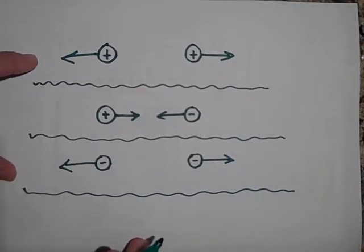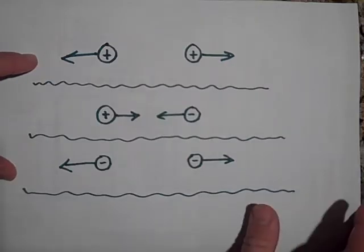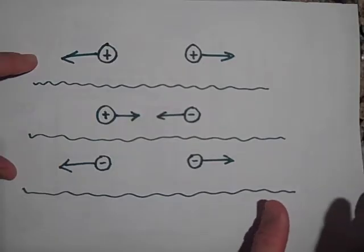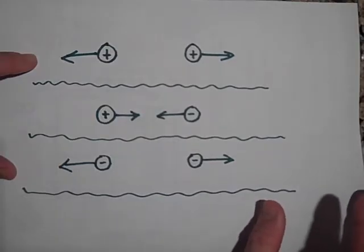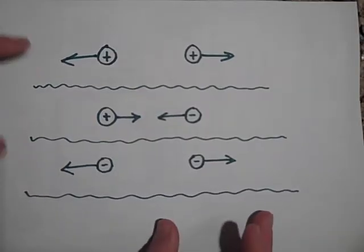The protons are in the nucleus with the neutrons, and the electrons are in the outer parts of the atom. They're negative.